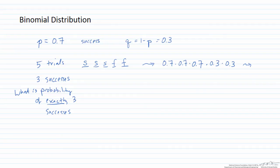However, if I am just asking for in five trials, what is the probability that I have exactly three successes? There are other arrangements that we can consider. So I can have a success, success, failure, success, failure. And that too would have the same exact probability. So 0.7 cubed times 0.3 squared. Or in general, I could write this as p cubed and 1 minus p squared for five trials.